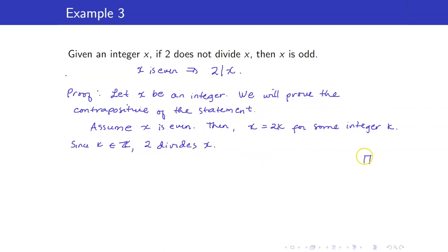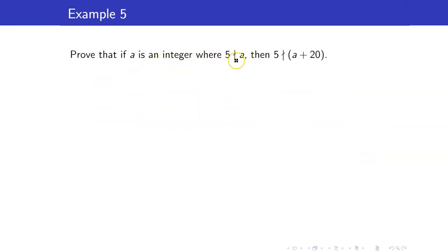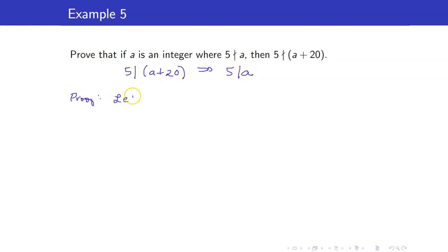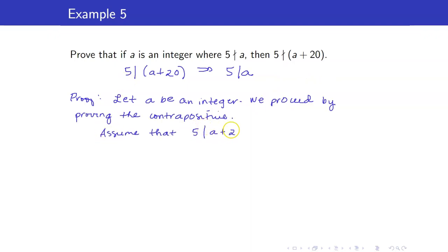That completes the proof. Next, let us show that if A is an integer where 5 does not divide A, then 5 does not divide A plus 20. Take note that you have negated statements here. It's easier to work with statements that are not negated, so this gives you a hint to proceed by contrapositive. Let us first write the contrapositive: if 5 divides A plus 20, then 5 divides A. Let A be an integer. We will proceed by proving the contrapositive, so we start with 5 dividing A plus 20. Thus, there exists an integer K such that A plus 20 is equal to 5K.